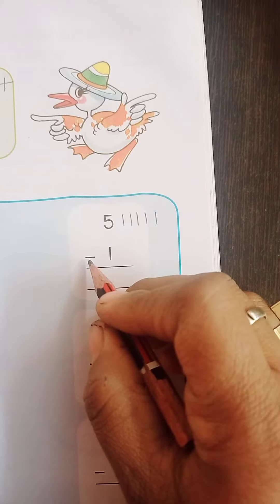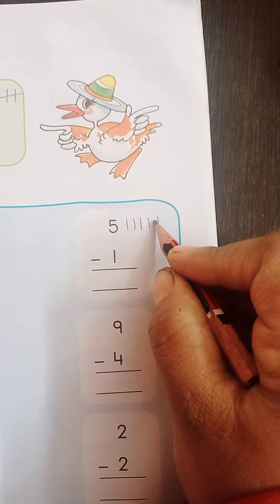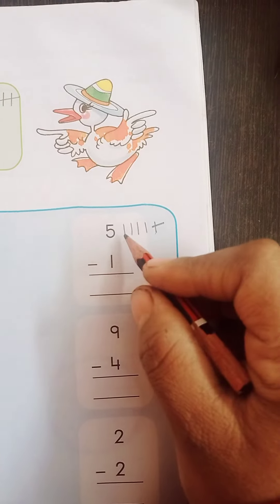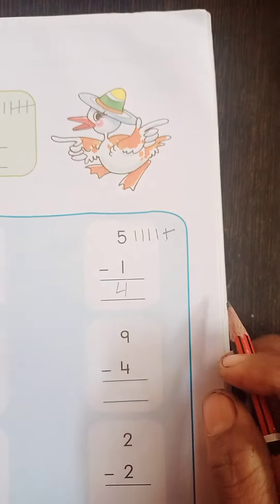1. Matlab, we have to subtract 1 from 5. To, we will cut 1 line. Then, what is the answer? 1, 2, 3, 4. Here, we will write 4, okay?